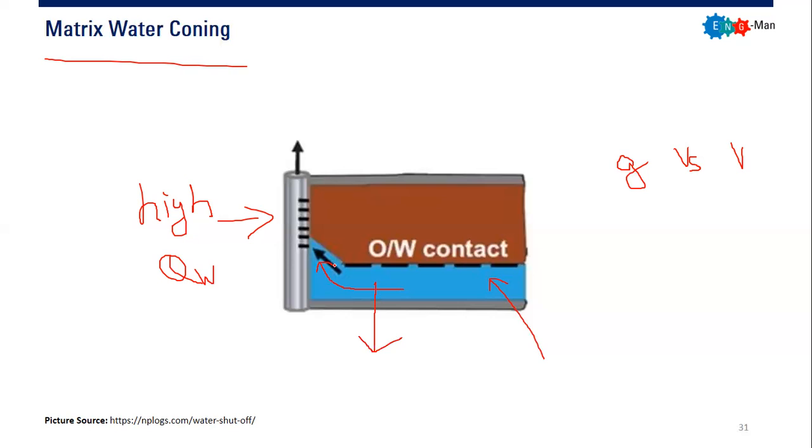You need sufficient permeability anisotropy. In order for the coning to be developed, you still need vertical permeability. If you want to solve water coning issues, it is recommended that you produce your well at a lower rate, lower than the critical coning rate.